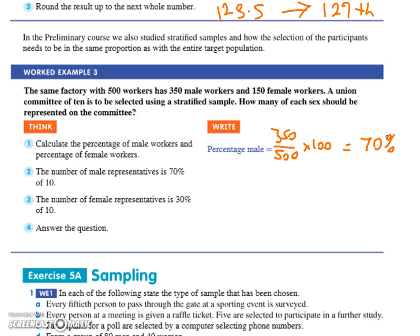So that's your percentage of male. How do you work out your percentage of female? You actually don't need to. Because realistically, if 70% are male, what percentage is female?